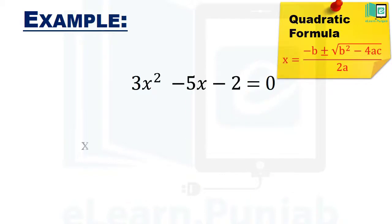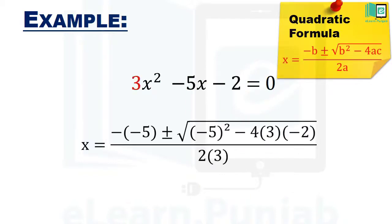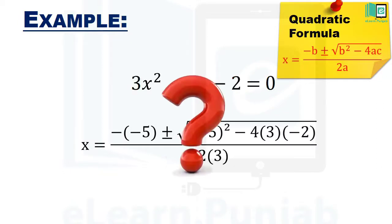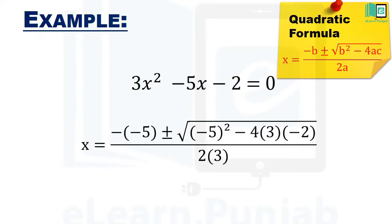इससे हमें ये हासल होगा — हमने A की value को 3, B की value को minus 5 और C की value को minus 2 से तबदिल किया है। अब हमें सिर्फ इसे मज़ीद हल करना है। तो क्या अब आप मुझे equation के दो roots बता सकते हैं?